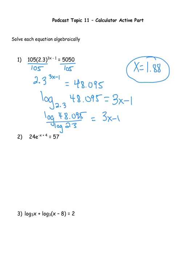Moving on — question number two is also an exponential equation, but a little different because it has e in it. That actually makes it easier. The exponent (negative x + 4) does not apply to the 24, so we divide both sides by 24 first. Picking up my calculator, I get 2.375. Now just like the previous question, I'm going to write this in log form — log base e, since e is what has the exponent — of 2.375.